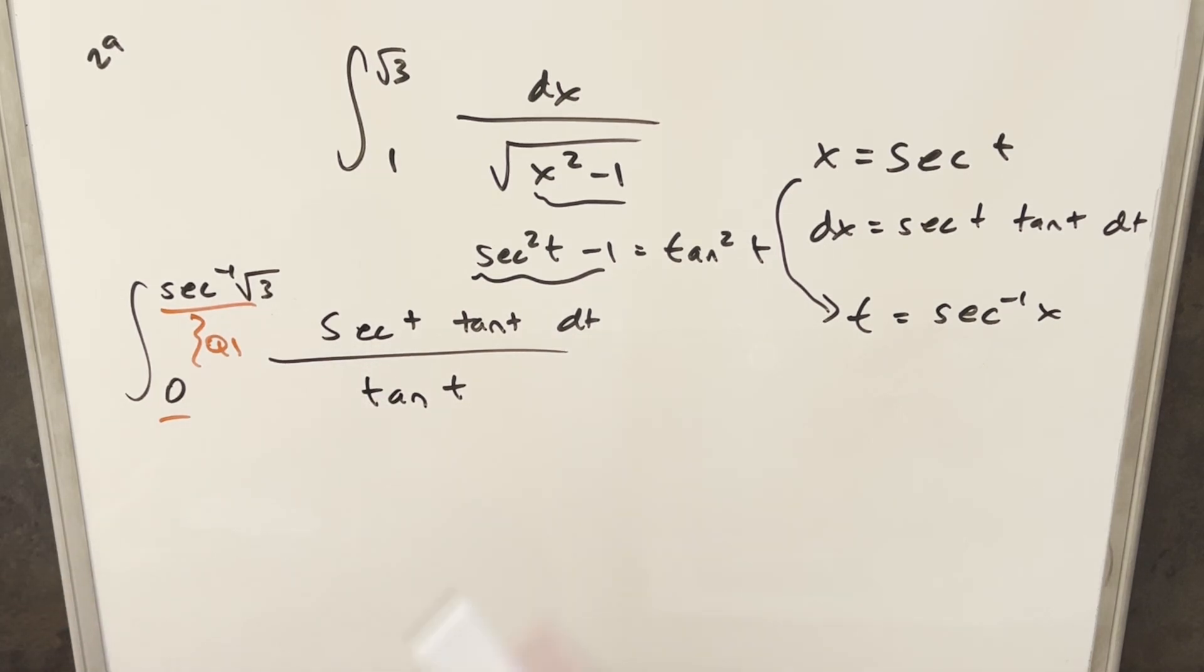And then what we can do is just cancel the tangents, and we're just integrating secant. So going ahead with this integral, this is just going to give me ln absolute value secant t plus tan t.